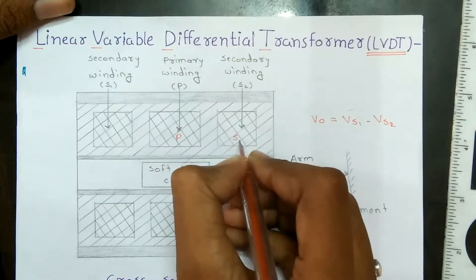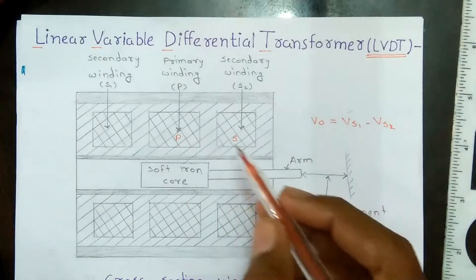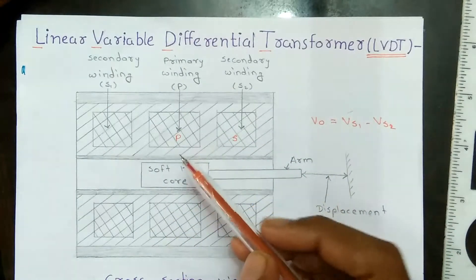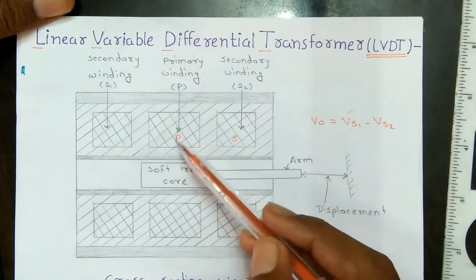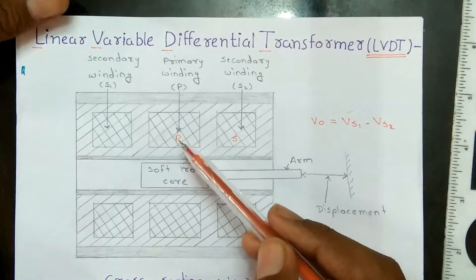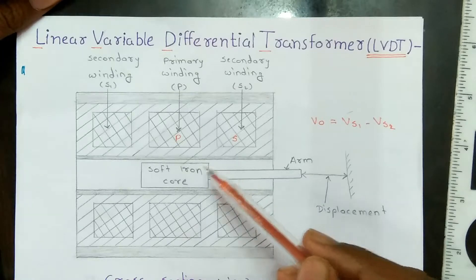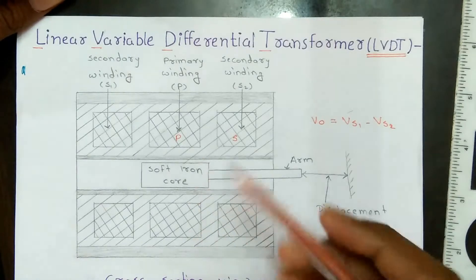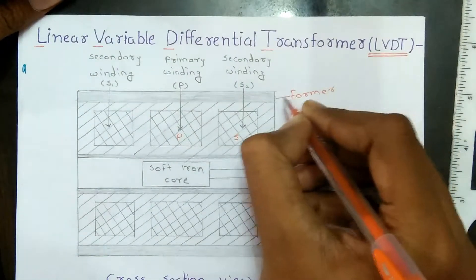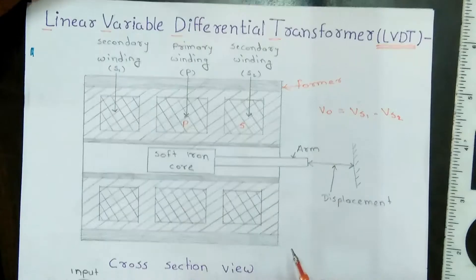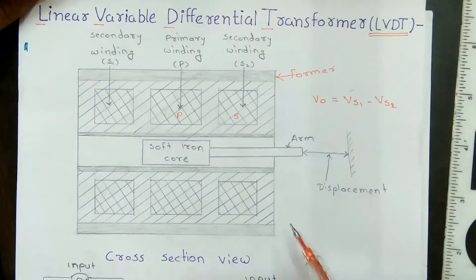The single primary winding P, through which the AC input supply is given to the LVDT, and the two secondary windings S1 and S2 are wound on a cylindrical former. The secondary windings have equal numbers of turns.